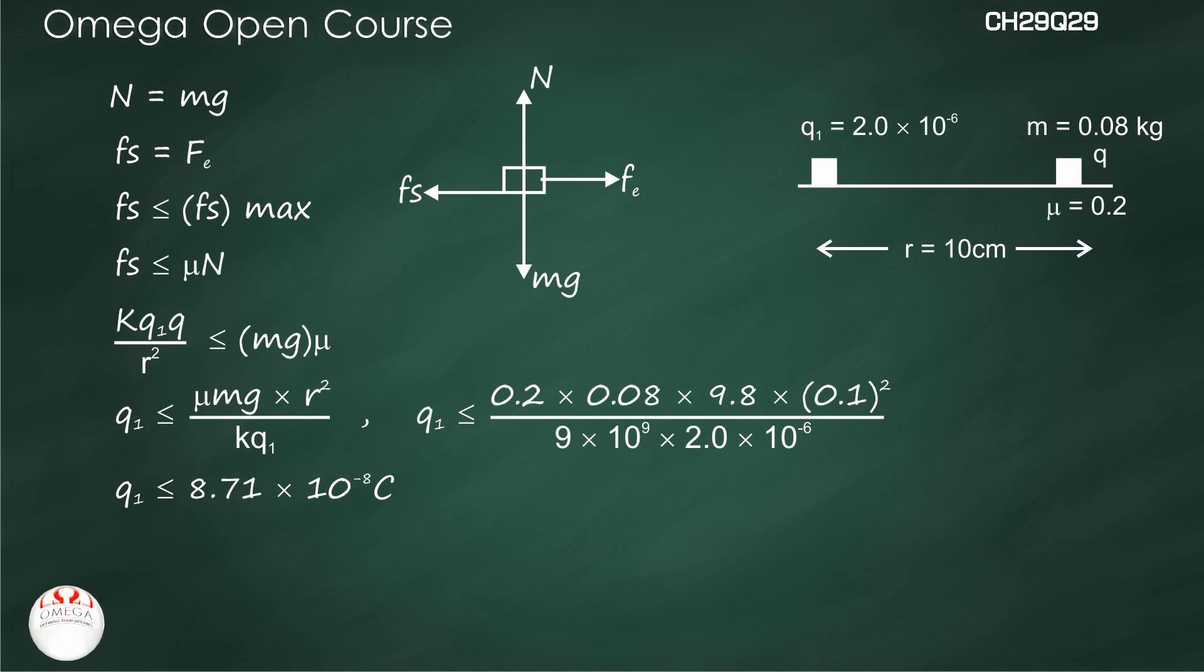For the negative charge case, the range of charge of the second particle is from -8.71 × 10⁻⁸ to 8.71 × 10⁻⁸ coulombs.